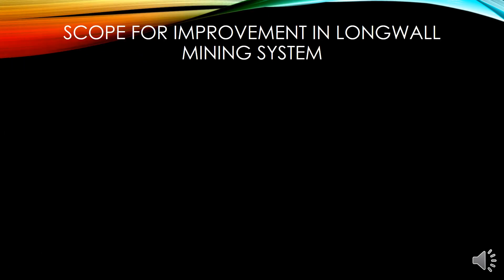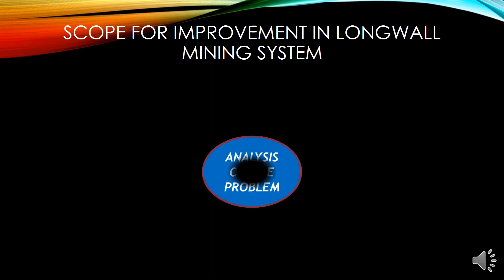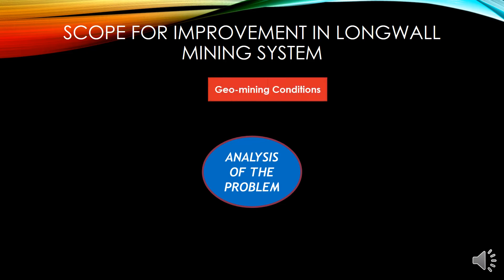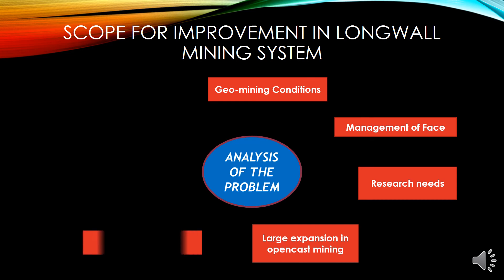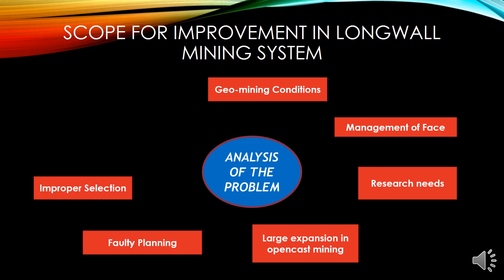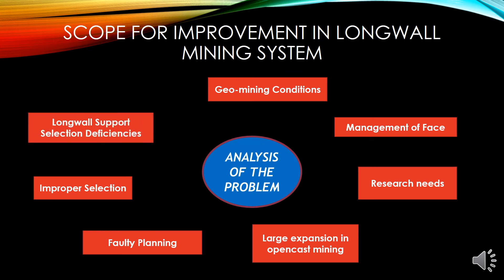With the help of the above case study, we will discuss the scope for improvement in longwall mining systems, which involves analysis of problems including the following 7 factors: (1) Geo-mining conditions, (2) Management of spaces, (3) Research, (4) Open cast mining, (5) Faulty planning, (6) Improper selection, and (7) Longwall support selection deficiencies.